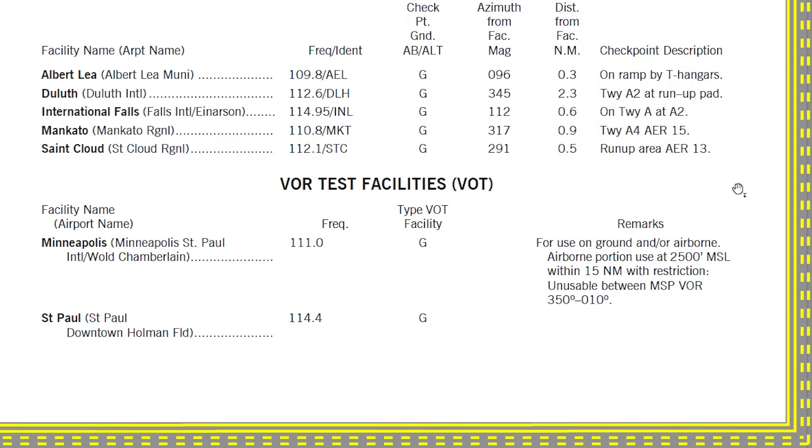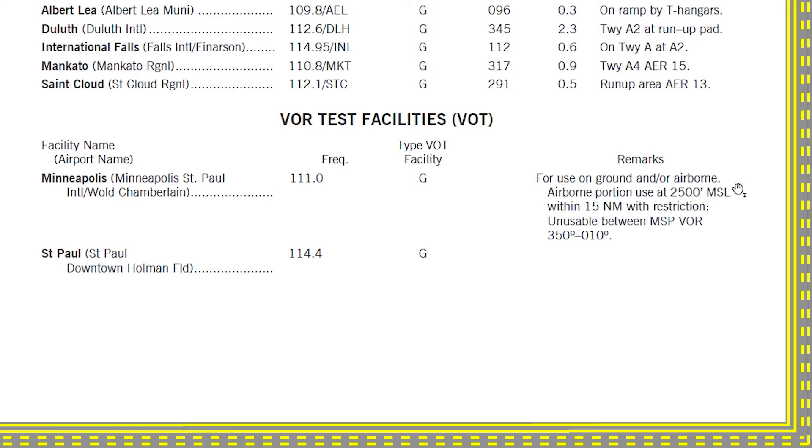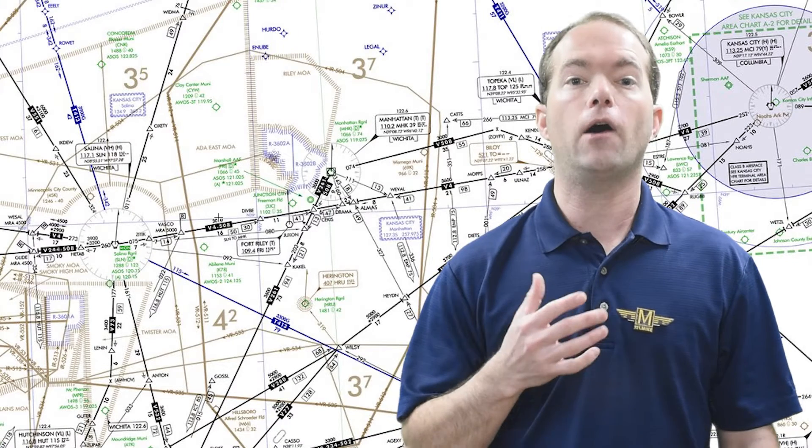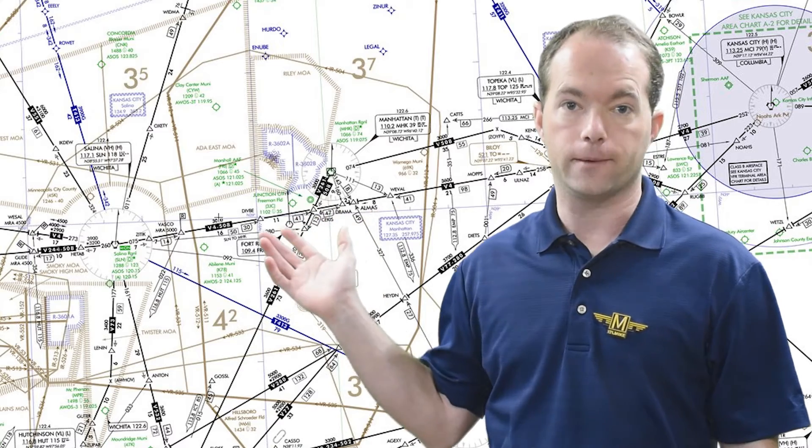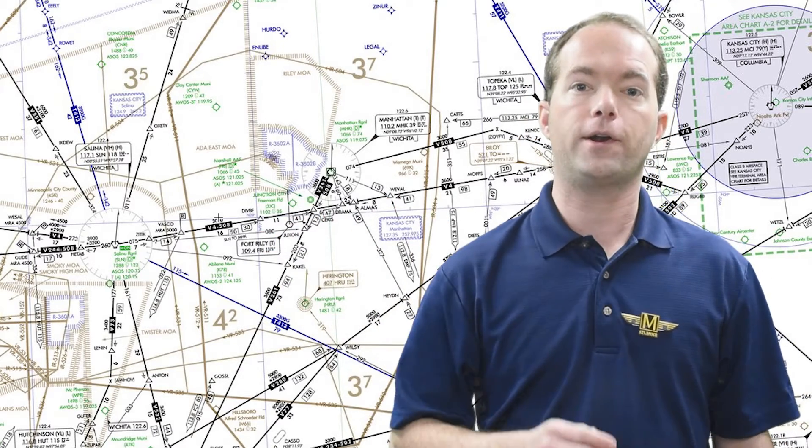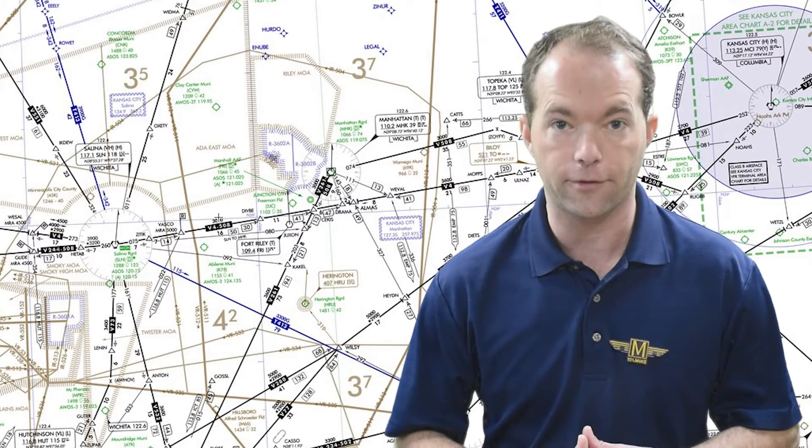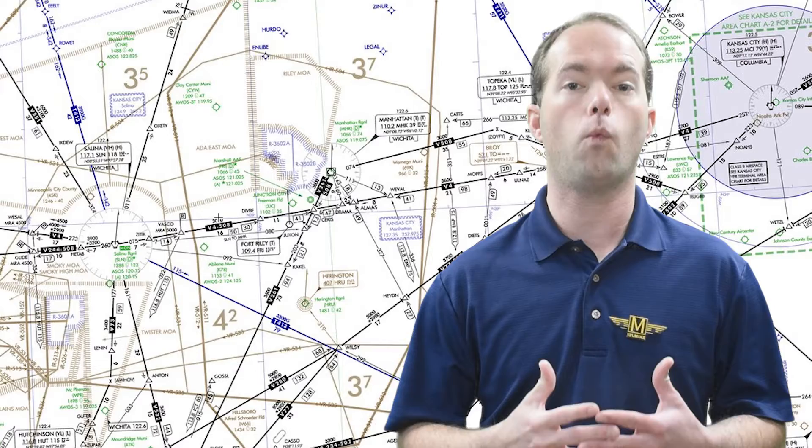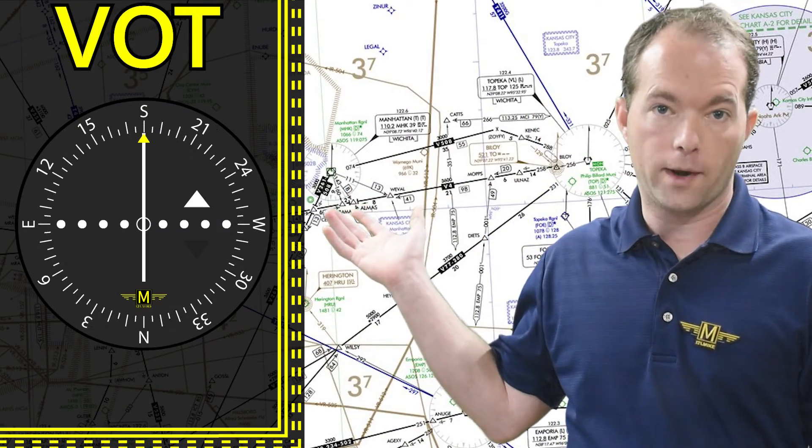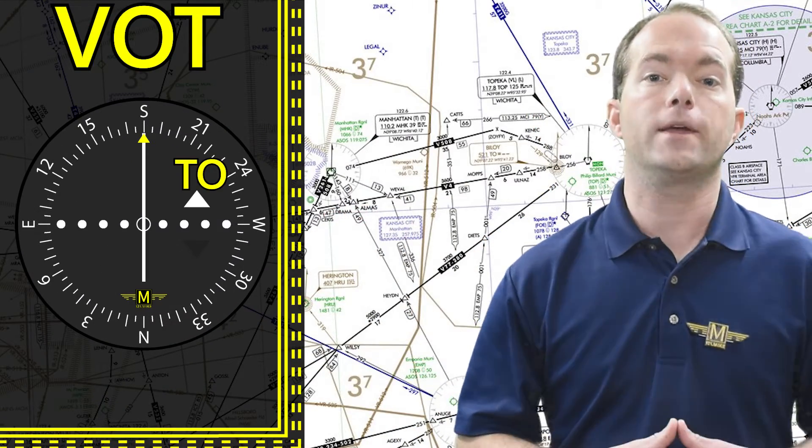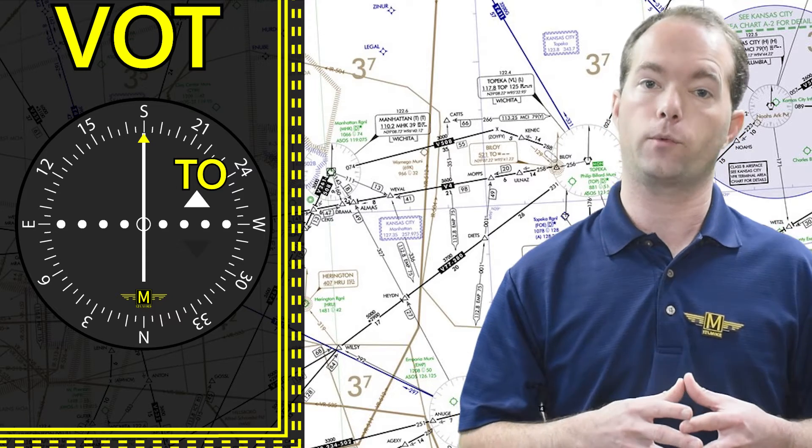VOR test facilities, or VOT, on the charts send out a signal that you can use to check the accuracy of your VOR. Now here's how I remember what the signal should be. Have you ever flown in the Cessna 180 from? No you haven't, and no one else has either. Cessna doesn't make a 180 from. They make a 182. So you turn your VOR to 180 and you should see a 2 indication on the flag. I bet that sticks with you.